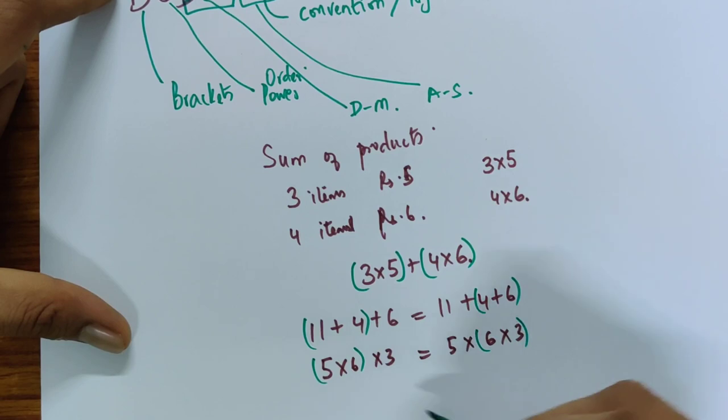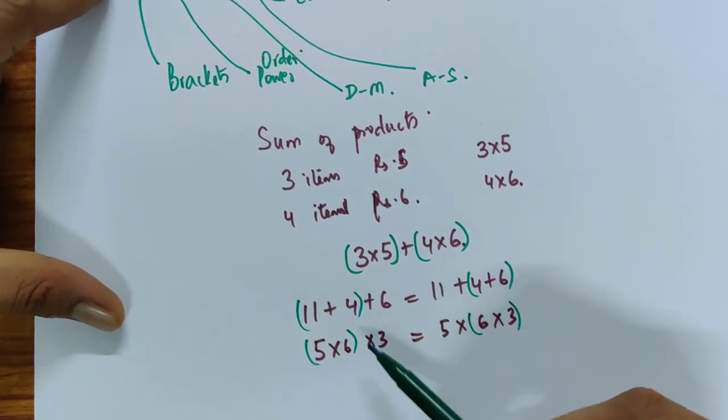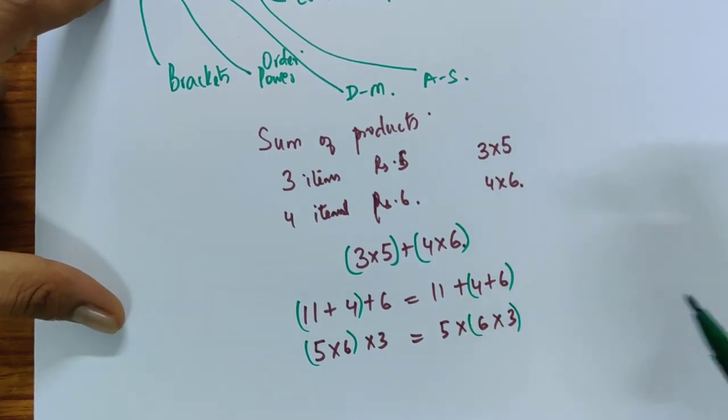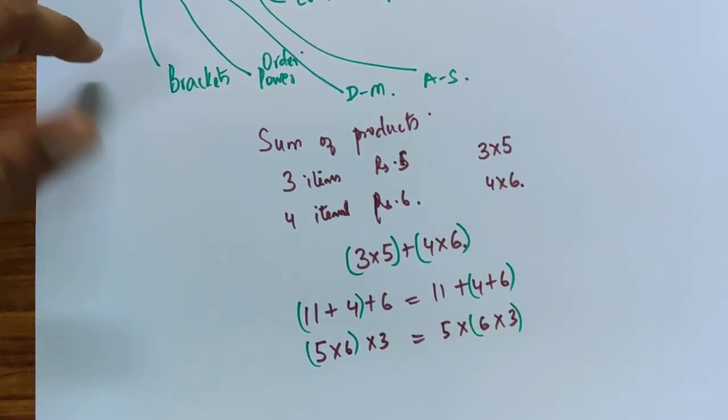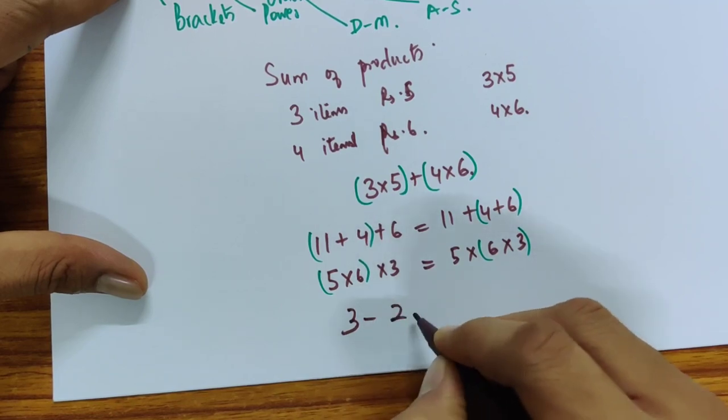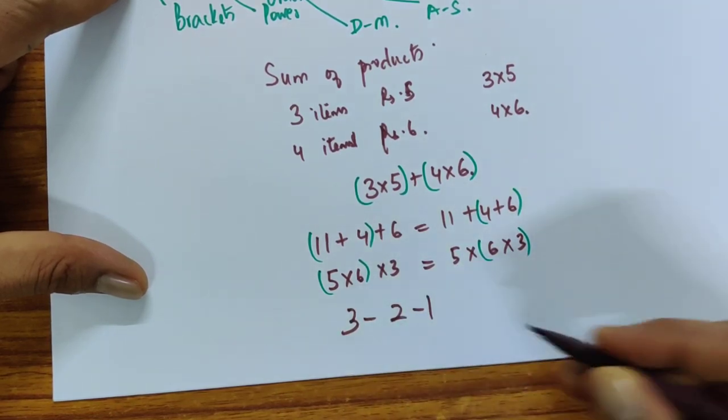It may be more convenient to do the first because you get 30 and then you can multiply by 3 and get 90 rather than multiplying this and saying it's 18 and 5. So it may be more convenient but it is not a different result.